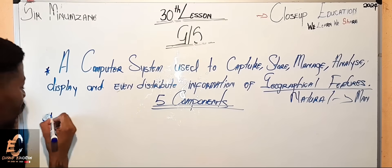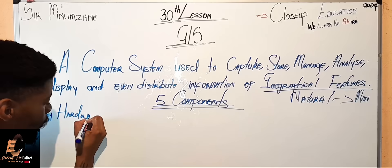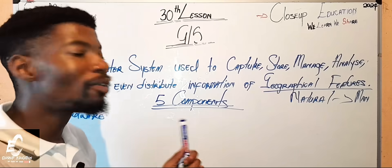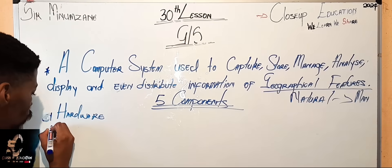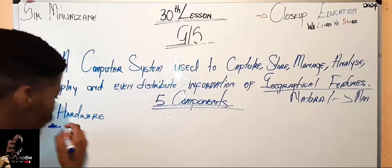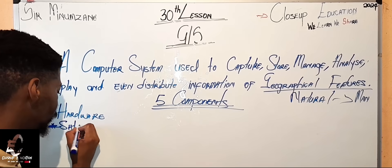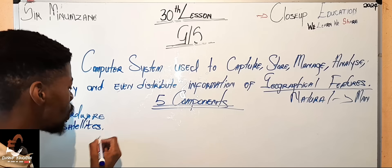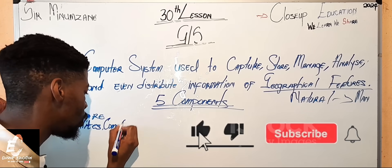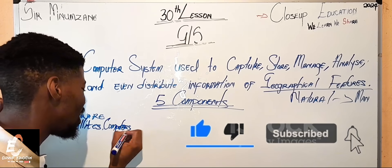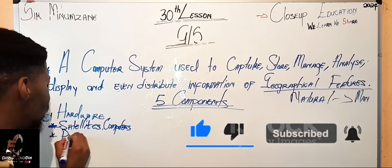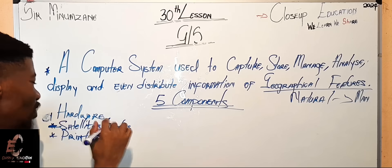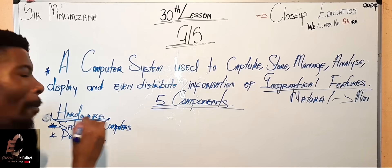Number one: hardware components. Hardware includes your satellites, your computers, and definitely your printer, your mouse, your keyboard, and related devices. Those are the hardware components used to capture geographical information.